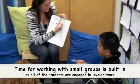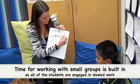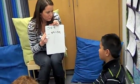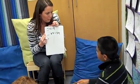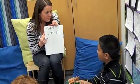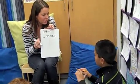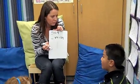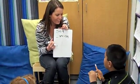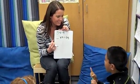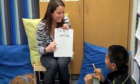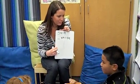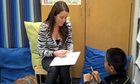Something times nine equals 54 — can you think about that fact? And if it doesn't spark in our brain, it's okay, because what's the next strategy we can go to? Repeated subtraction.